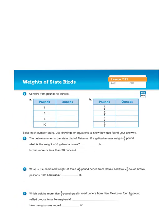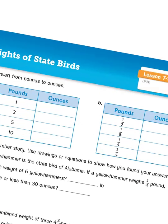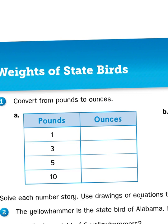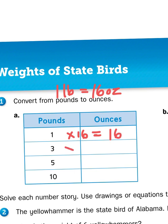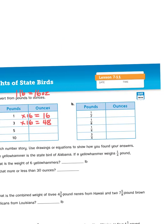Problem number one, A and B, are basically a pair of input-output problems — function tables. I need to multiply the number of pounds by the number of ounces per pound. In 1A, all I have to remember is that 1 pound (LB) equals 16 ounces (OZ). So when solving for the number of ounces, multiply the number on the left times 16. One times 16 is 16. Three times 16 is just like adding 16 plus 16 plus 16, which gives us 48. So just multiply the number in the left column by 16.